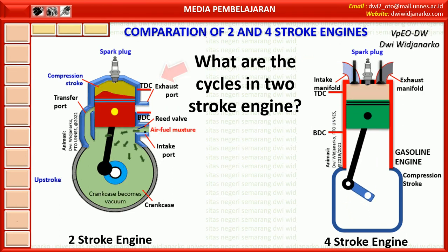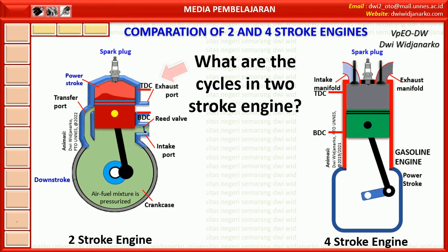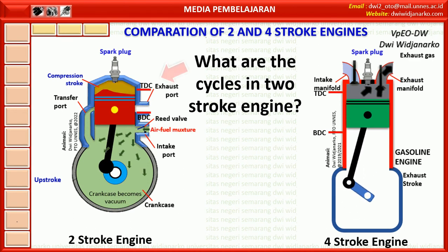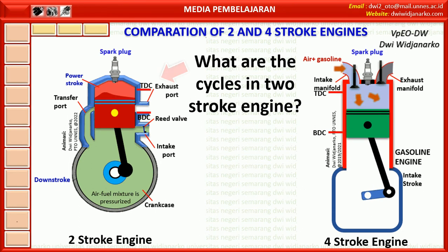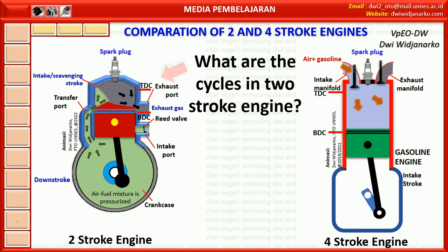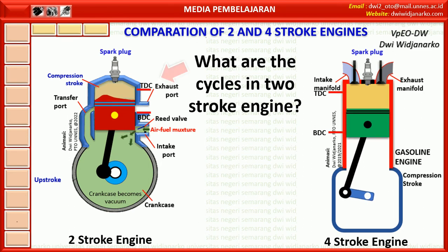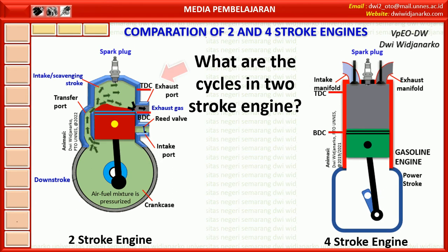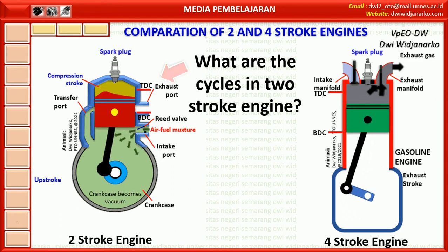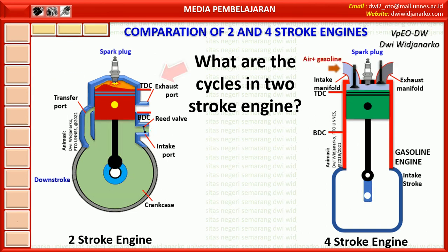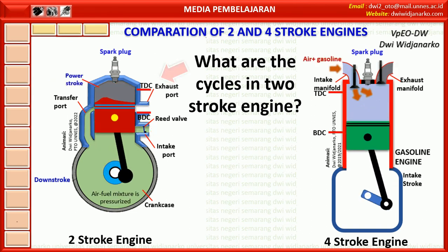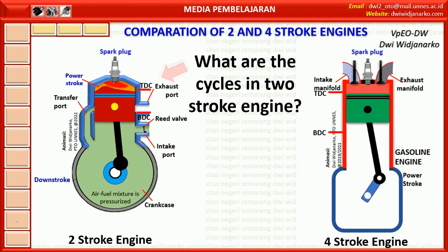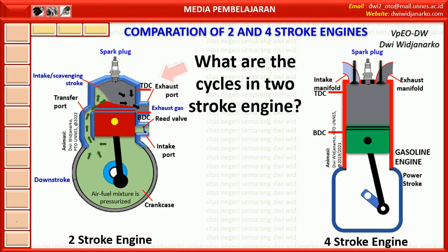In the upstroke, there are 2 events. In the crankcase, the volume increases as the piston moves up, while at the top of the piston there is a compression stroke. For the downstroke, the piston moves from top dead centre to bottom dead centre because combustion occurs after the spark plug sparks. The piston is pushed down due to high pressure from combustion. When the piston moves down and the exhaust port opens, the combustion gases exit through the exhaust port. As the piston moves down, the pressure in the crankcase increases due to the downward movement of the piston.